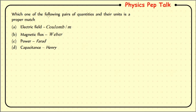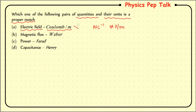Next question: which one of the following pairs of quantities and their units is a proper match? Checking the options: electric field has unit newton per coulomb, not coulomb per meter — so that option is wrong. Power is measured in joules per second, not farad — wrong. Capacitance is measured in farad, not henry — wrong. Magnetic flux and Weber is the correct pair. Therefore option B is the correct answer.